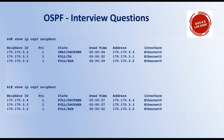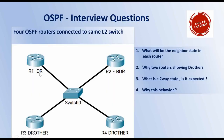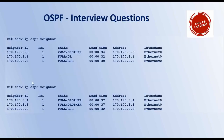Similarly, if you give 'show IP OSPF neighbor' from R1, which is the DR, you can see full adjacency with all other routers — that is with R2, R3, and R4. R2 is your BDR, and R3 and R4 are DR others.